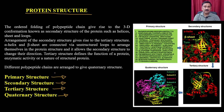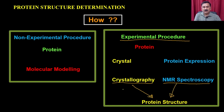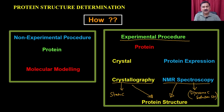While discussing structure determination of tertiary structures in the previous module, we covered different experimental methods — X-ray crystallography and NMR spectroscopy. X-ray crystallography gives a static structure, whereas NMR spectroscopy gives a dynamic or solution structure. In today's lecture, we are going to discuss the non-experimental method.